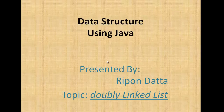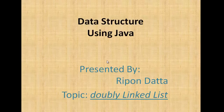Hey guys, welcome to Data Structure using Java. I'm Rippon Datto. Today's topic is doubly linked list. This tutorial will be in four parts. In the first part I will discuss what is a linked list, what is a doubly linked list, how to make a doubly linked list, and how to add a node at the front and back end. In the second part I will discuss how to remove a node from the front side and from the rear side.